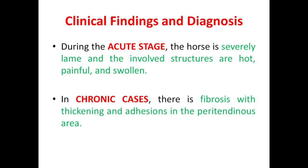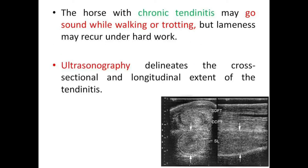Coming to the clinical findings and diagnosis, there are two stages. During the acute stage, the horse is severely lame and the involved structures are hot, painful, and swollen. In chronic cases, there is fibrosis with thickening and adhesions in the peritendinous area. The horse with chronic tendinitis may go sound while walking or trotting, but lameness may recur under hard work.